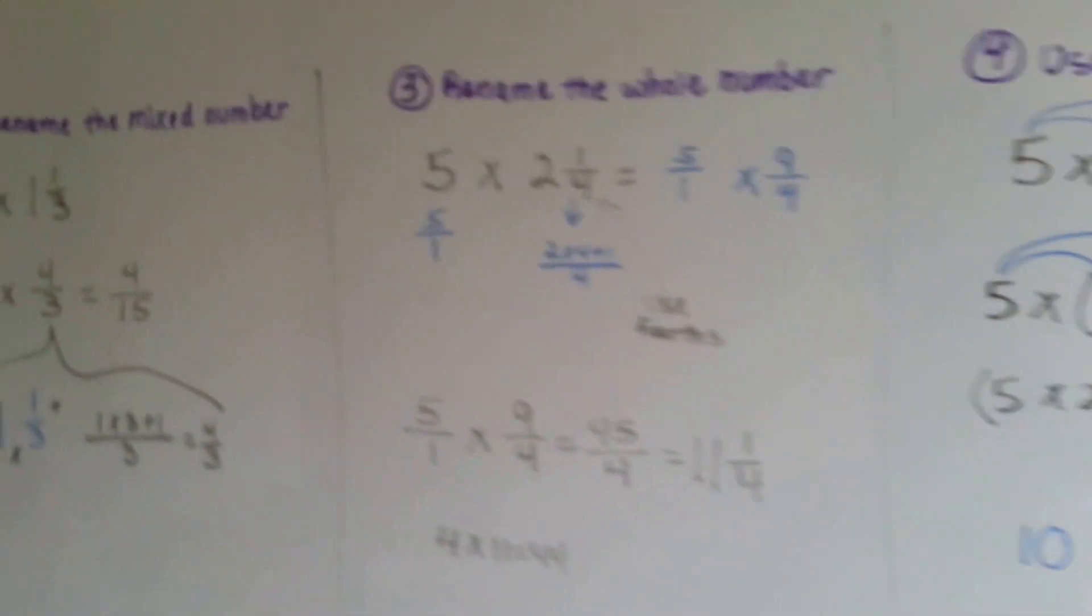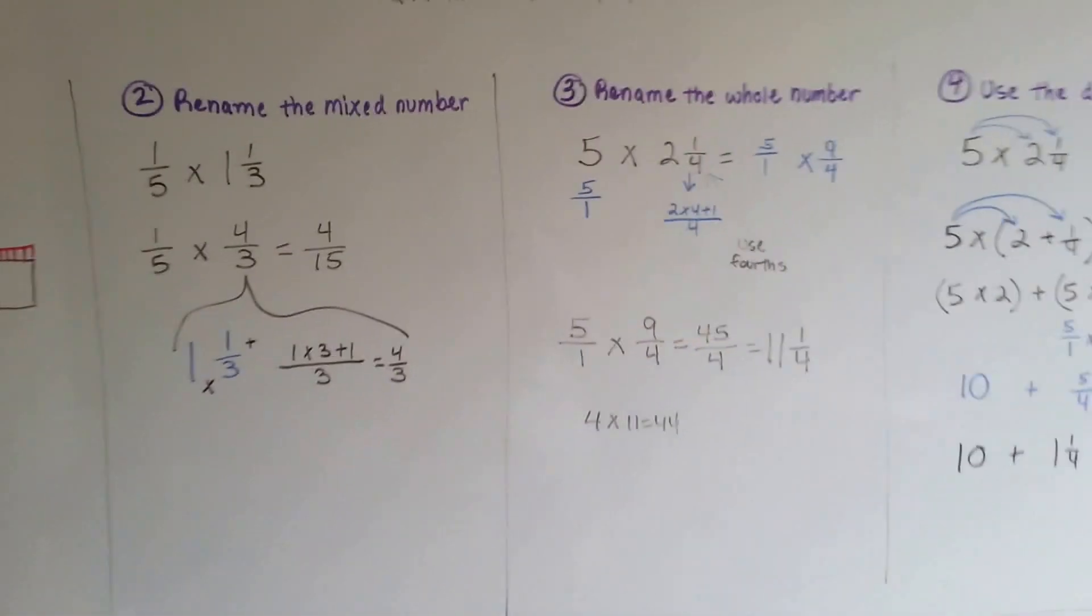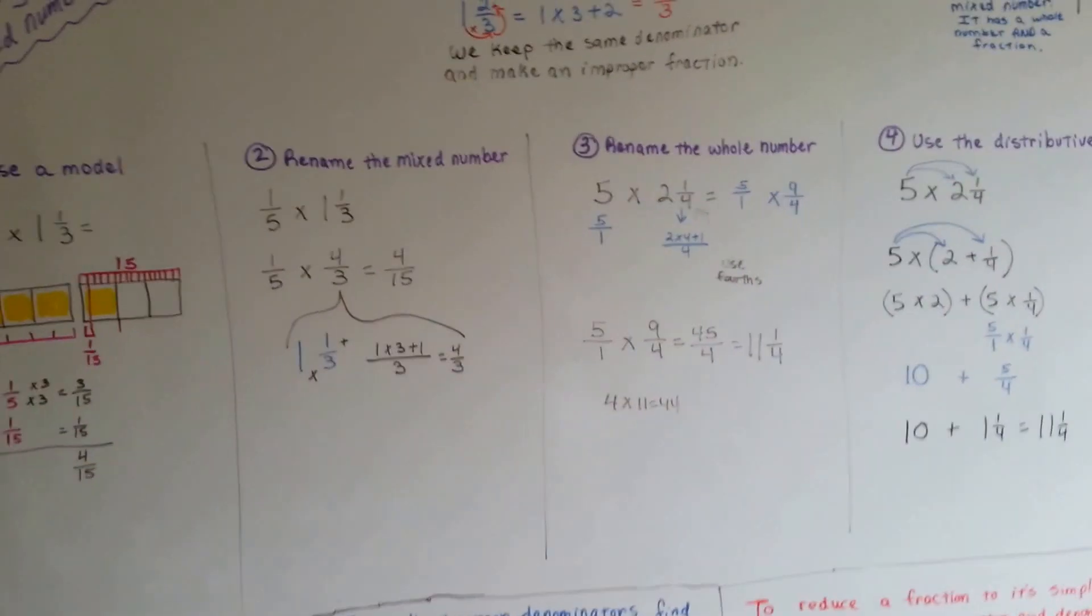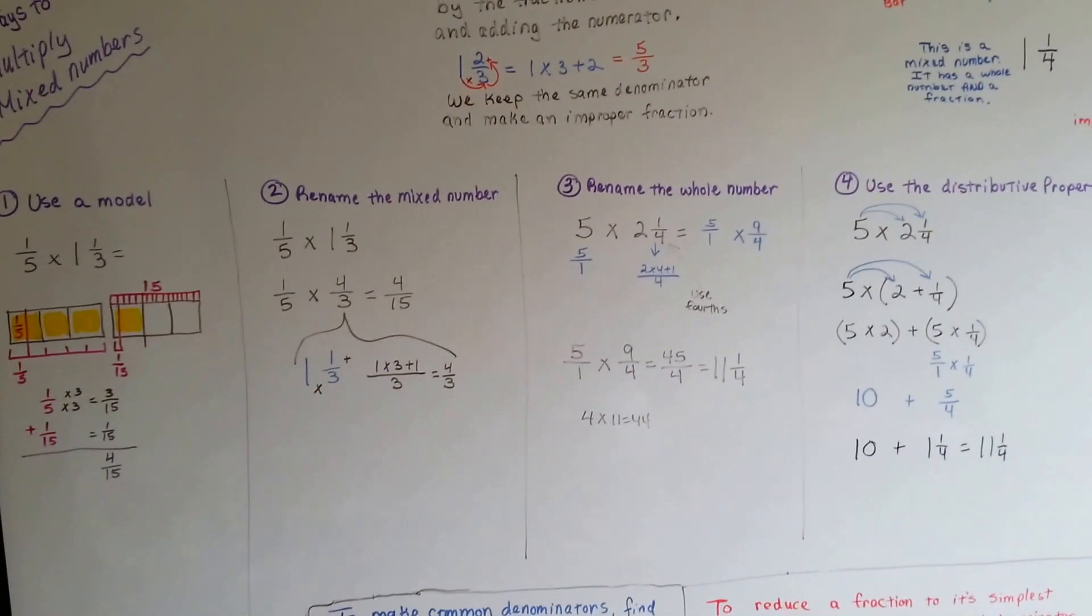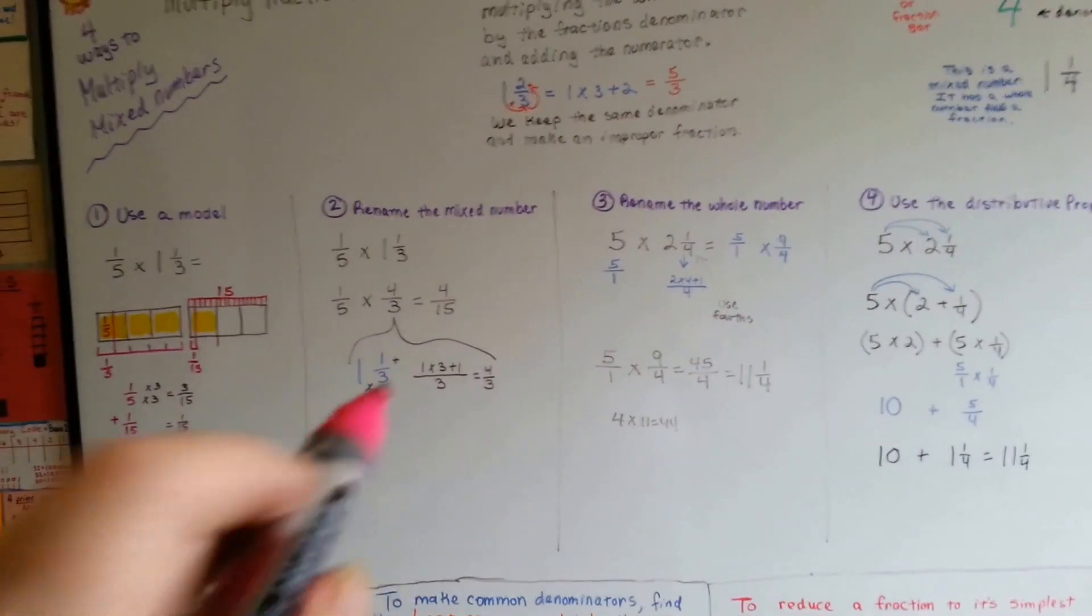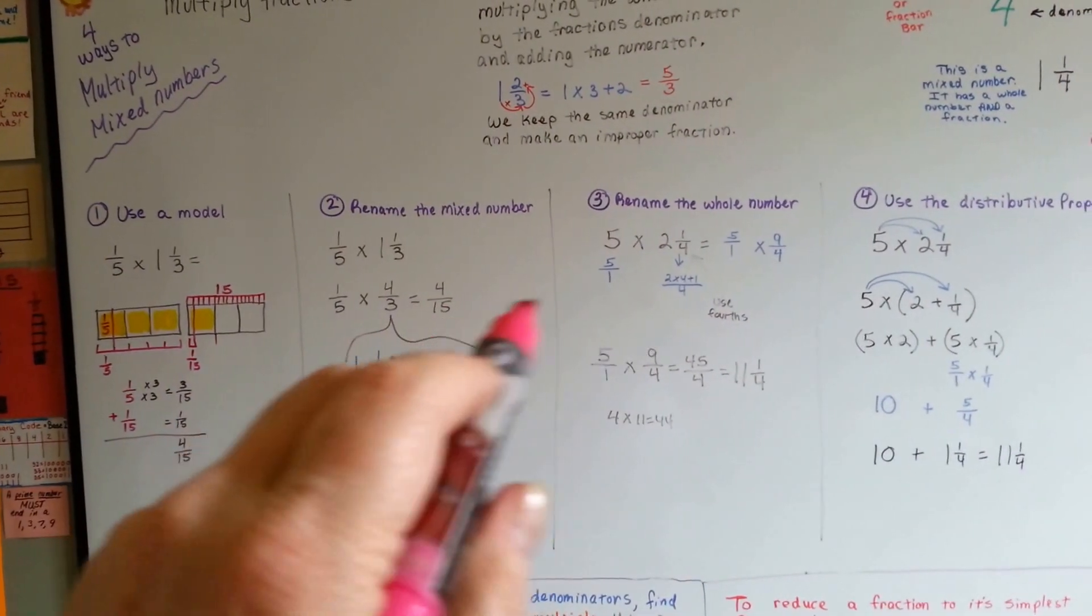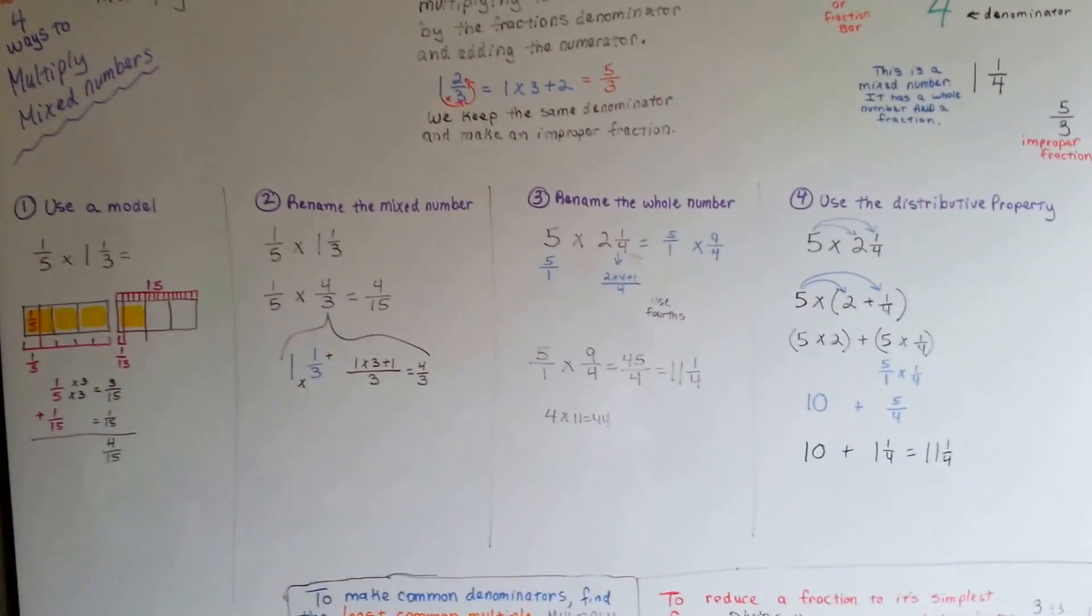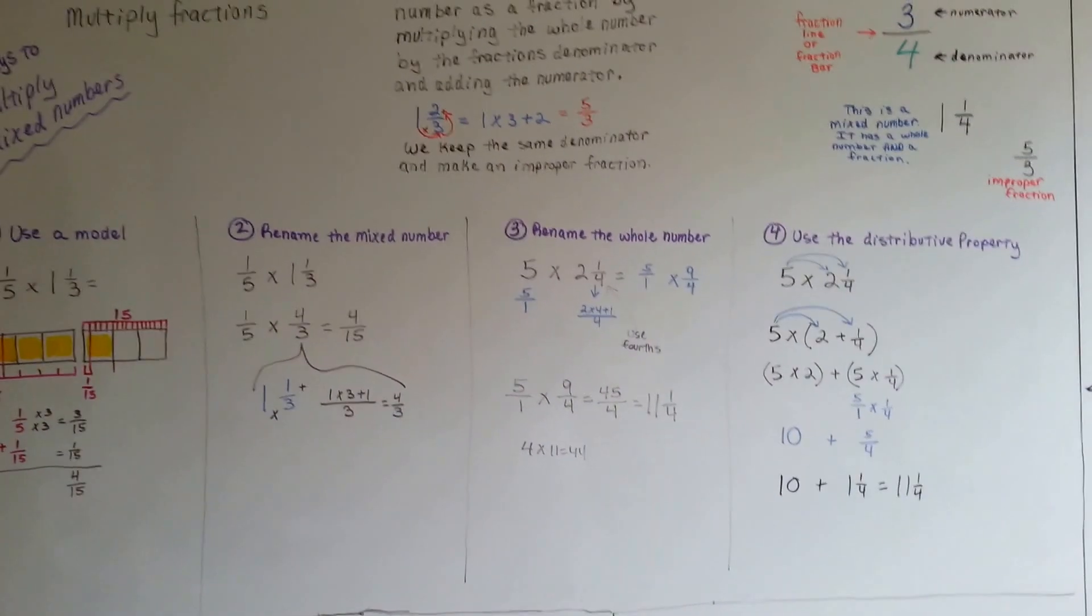So isn't that amazing? You've got to make sure you simplify, though. Make sure you have common denominators when you need to and make sure you simplify your fractions at the end. We can't leave them as improper fractions or if they can be simplified some more.